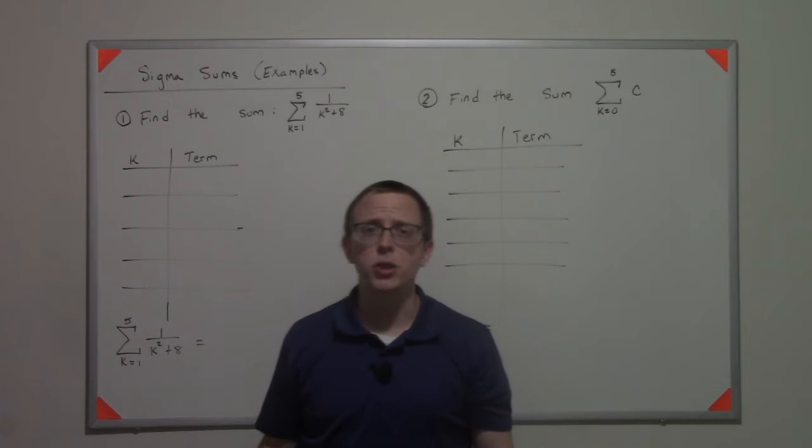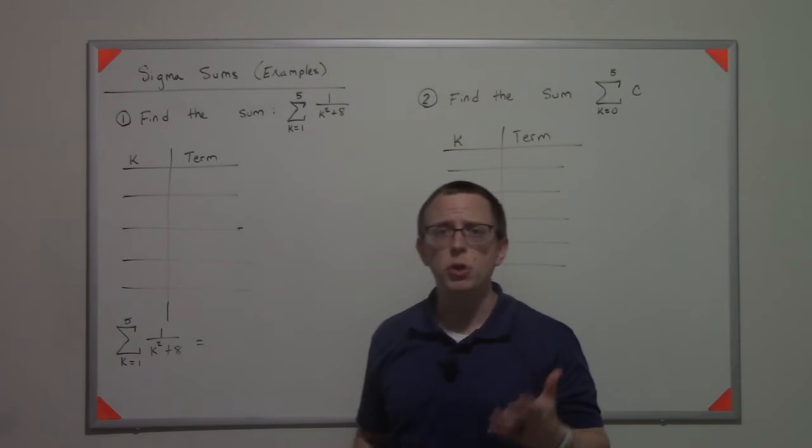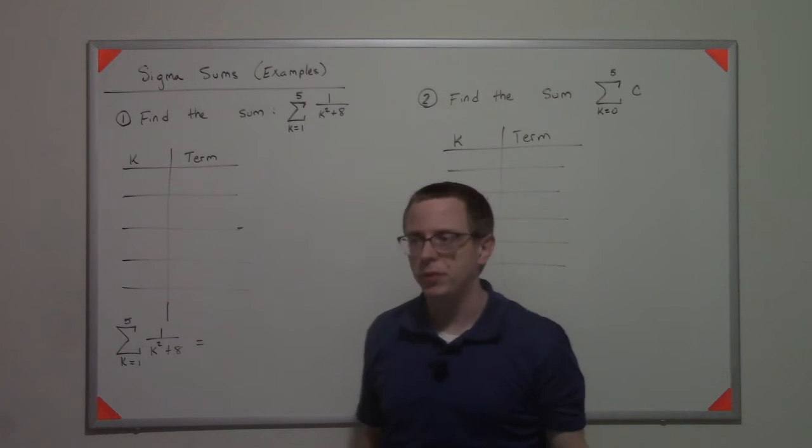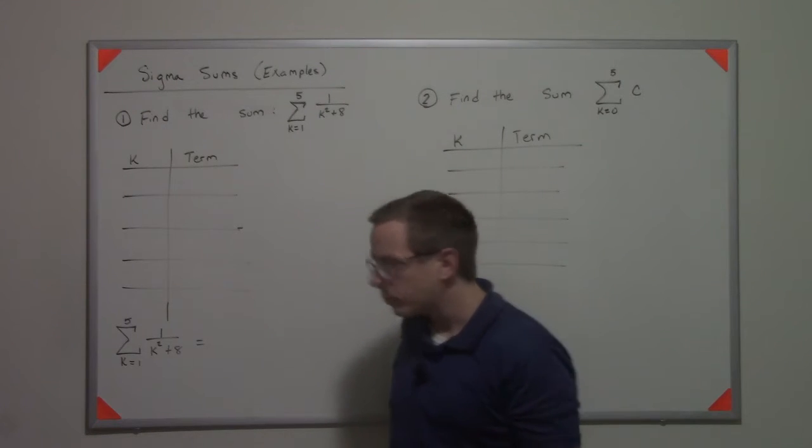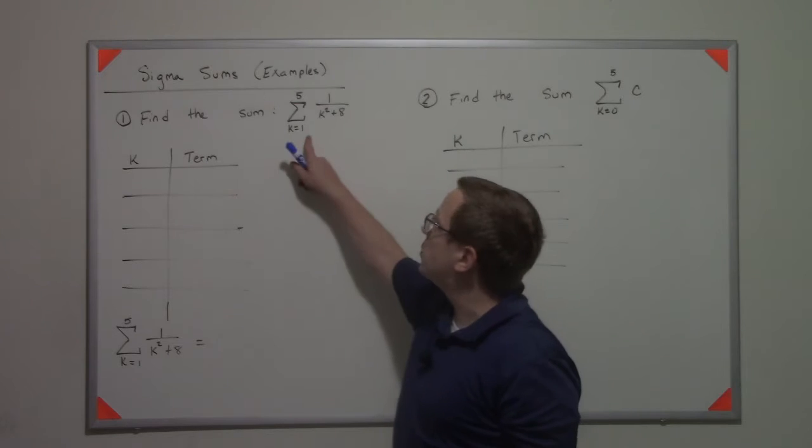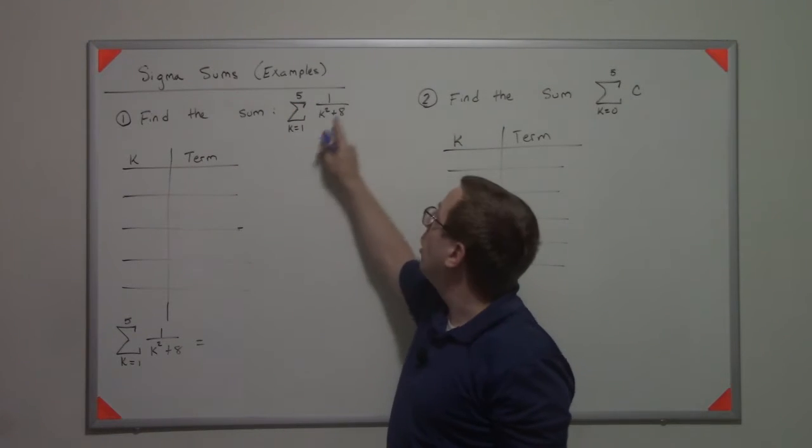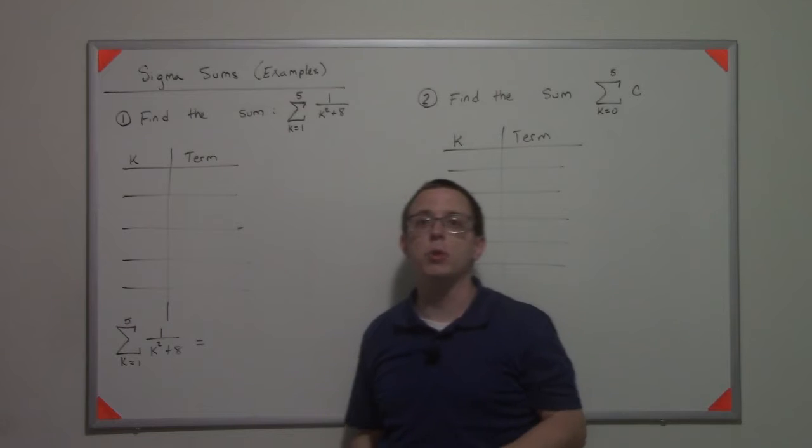We've covered the basics of sigma notation and sigma sums, so let's compute some given explicit series here. The first one is finding the sum k equals one to five of one over k squared plus eight.